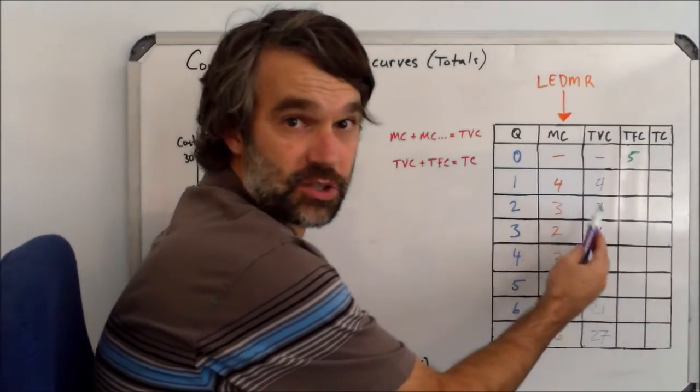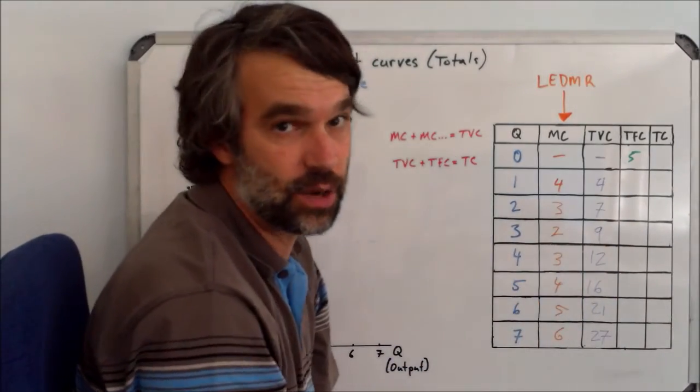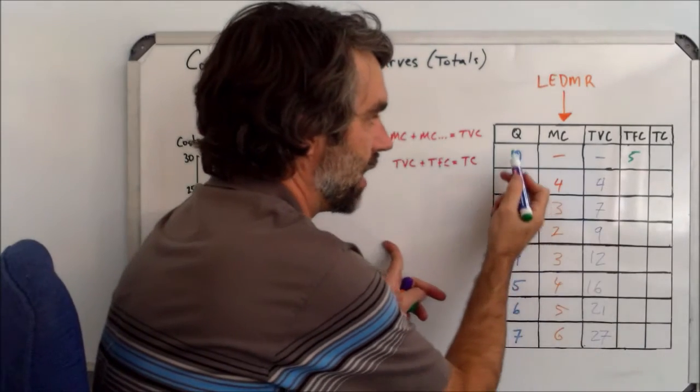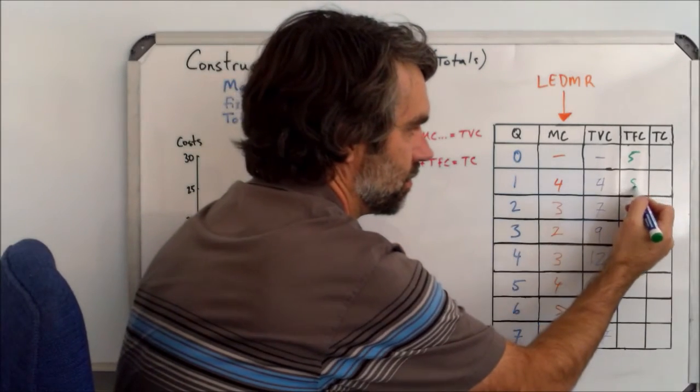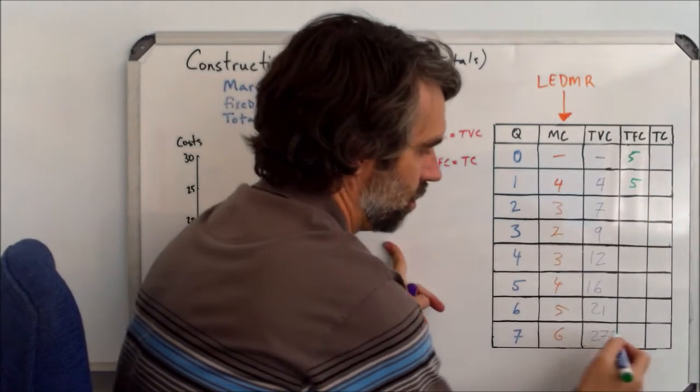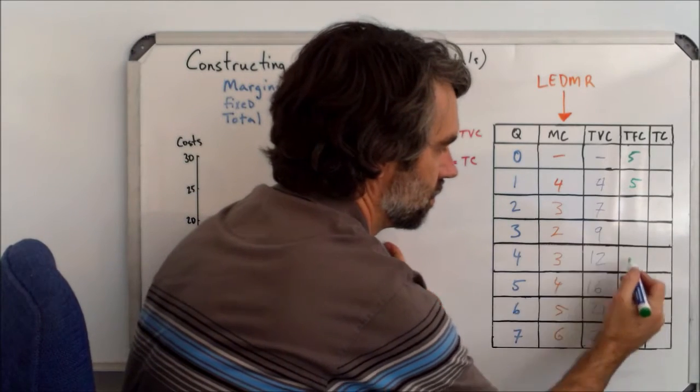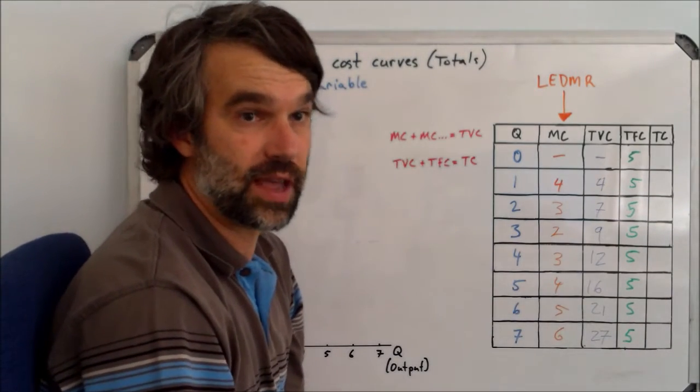The fixed costs are just that, they're fixed. So they're not going to change no matter what. So no matter whether I make one, or zero, or seven, the fixed costs are always the same.